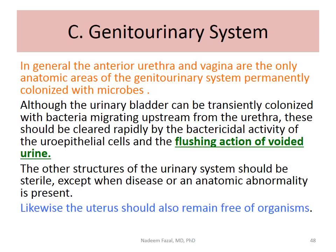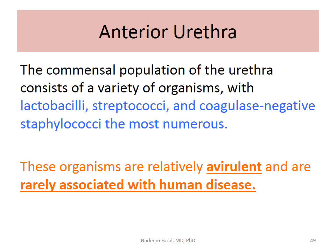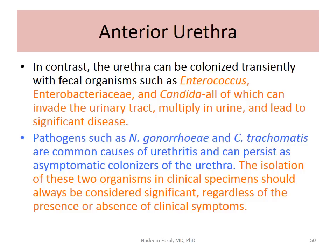The flushing action of voided urine is important as a protective mechanism. The commensal population in the urethra includes lactobacilli — the most important — streptococci, and coagulase-negative staphylococci from the skin because of the labia majora and minora. These organisms are avirulent and rarely associated with human disease. However, because of the proximity of the anal canal with the vagina and urethra, there are chances that fecal organisms may enter the urinary tract causing infection. Enterococcus and others can multiply in urine and lead to significant disease.